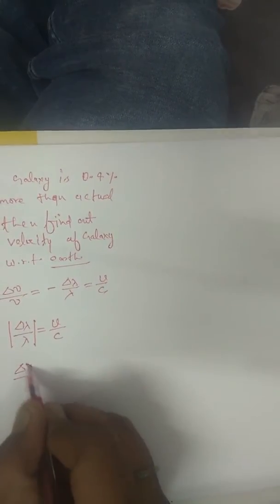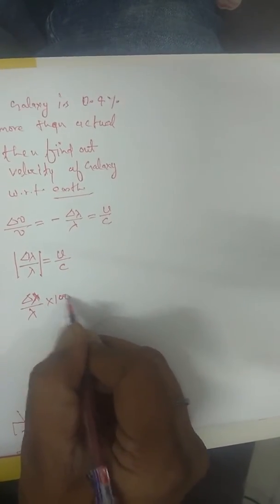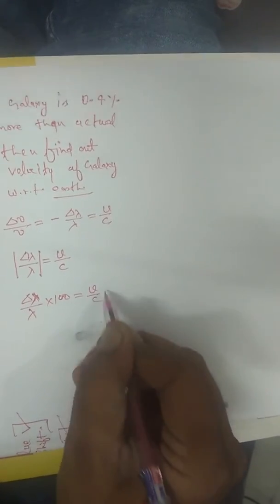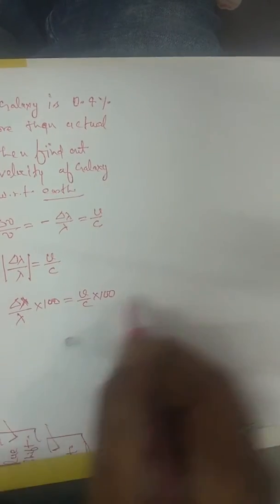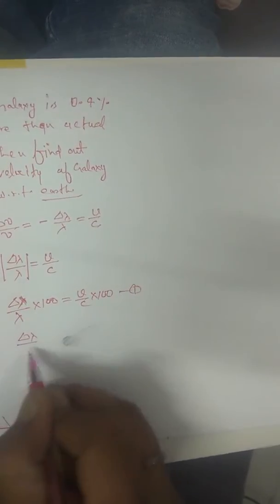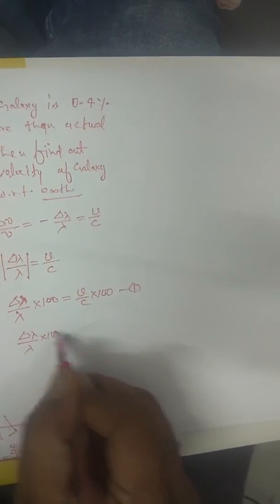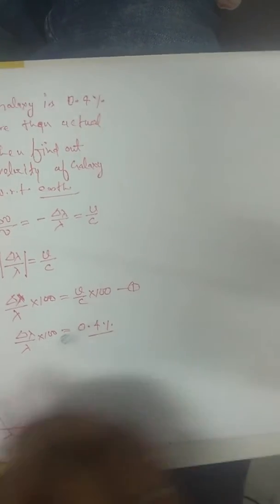So delta lambda upon lambda into 100 will be equals to v upon c into 100 and that is equation number one. In the question it is given that delta lambda upon lambda into 100 is equals to 0.4 percent. This is the percentage change in the wavelength.